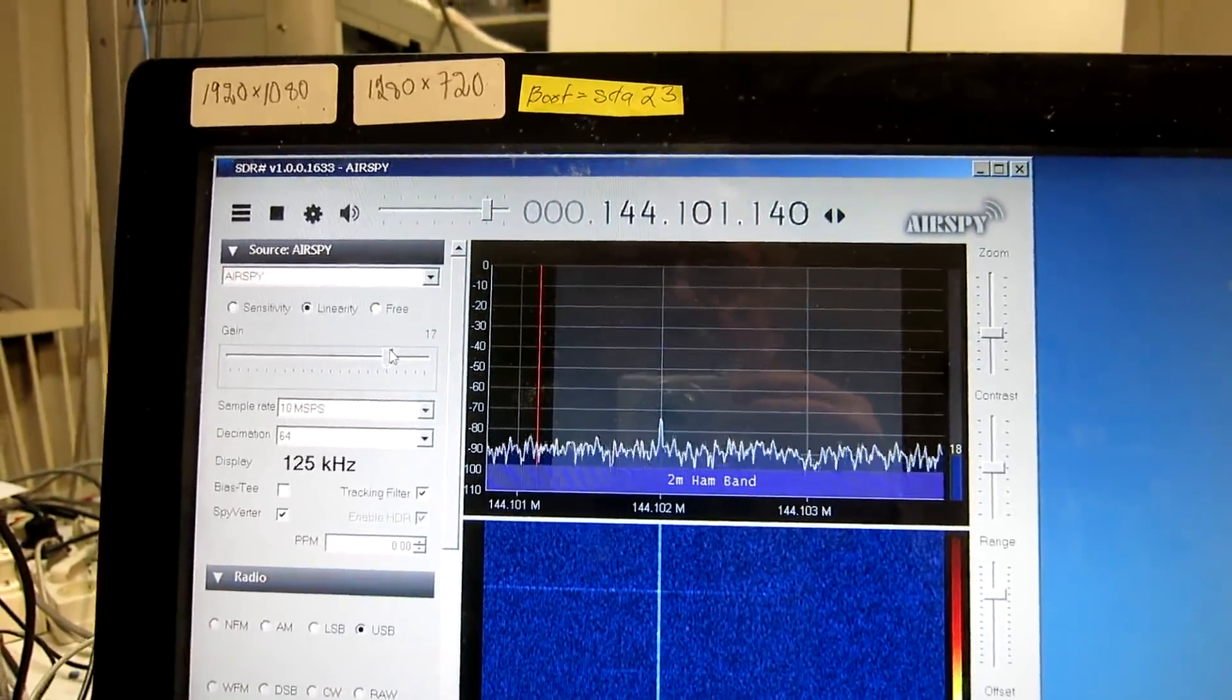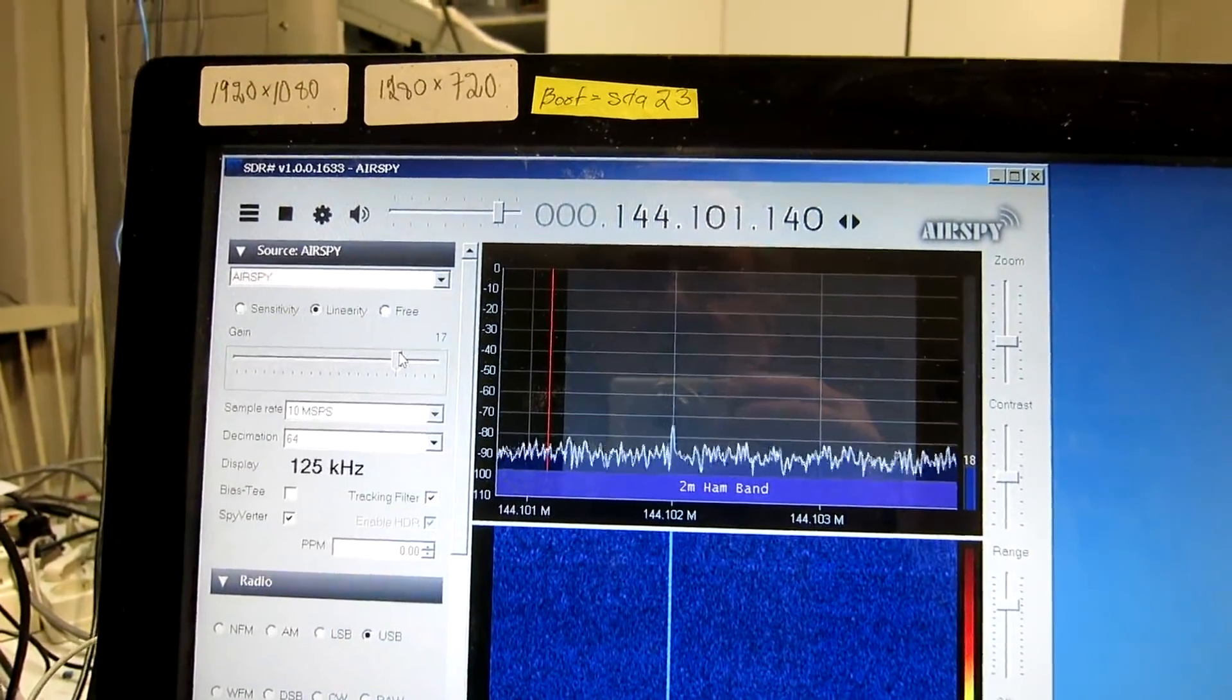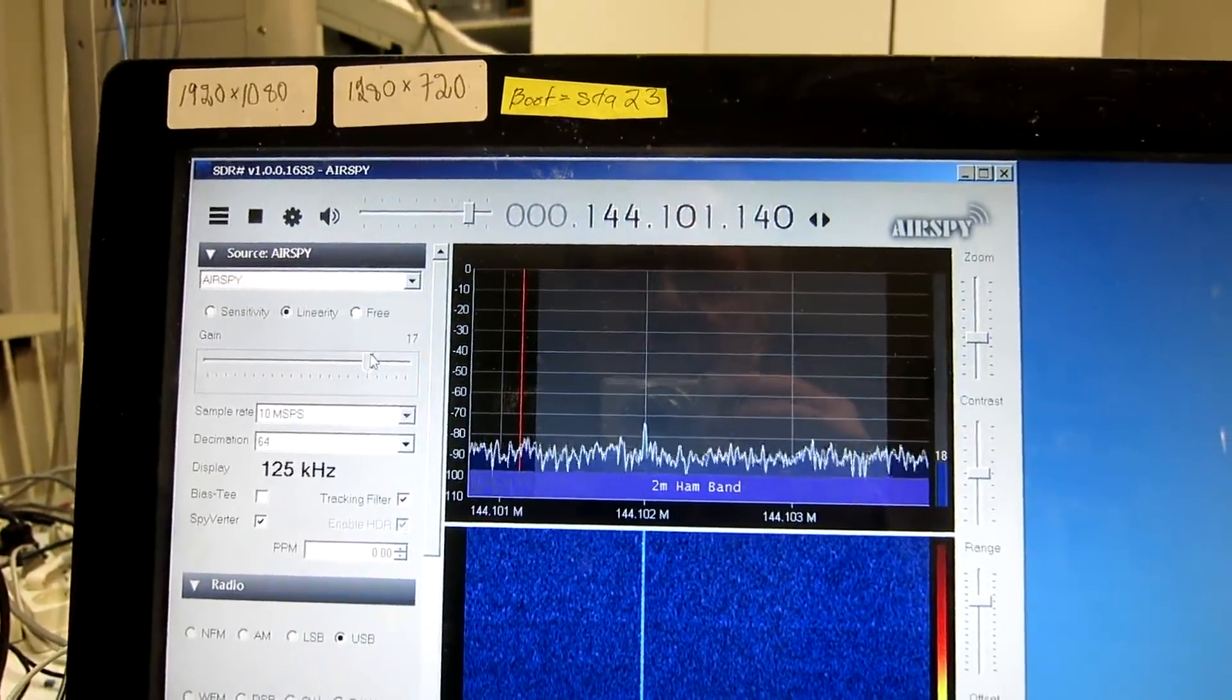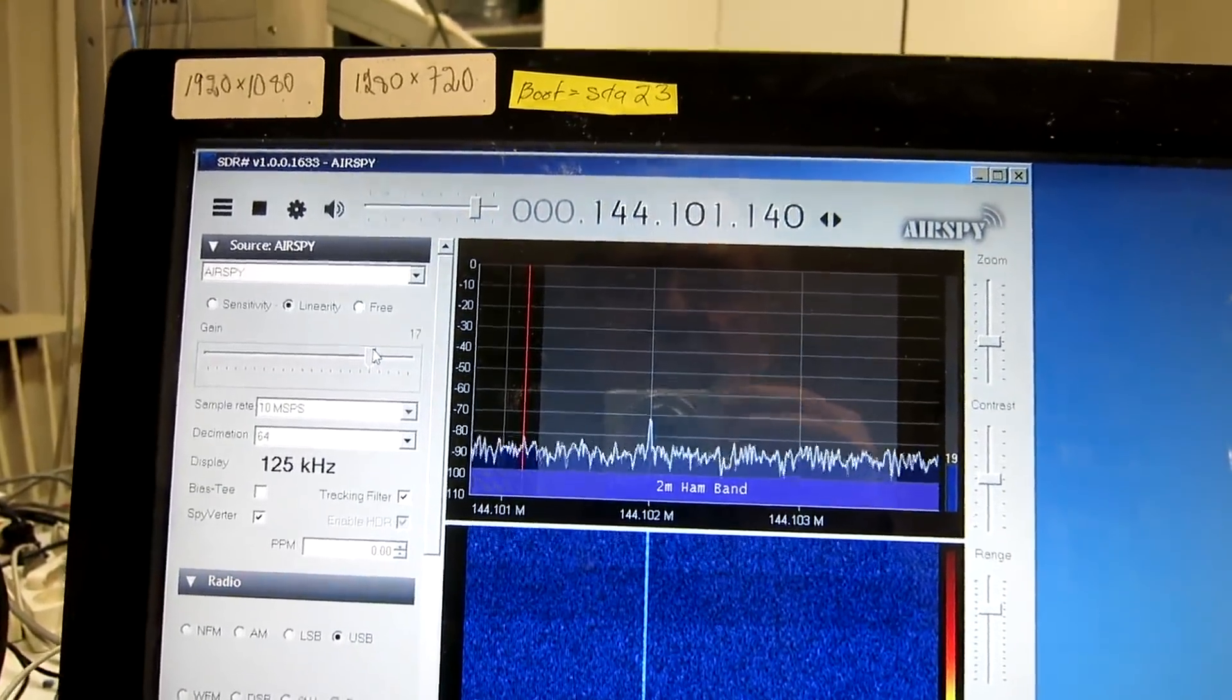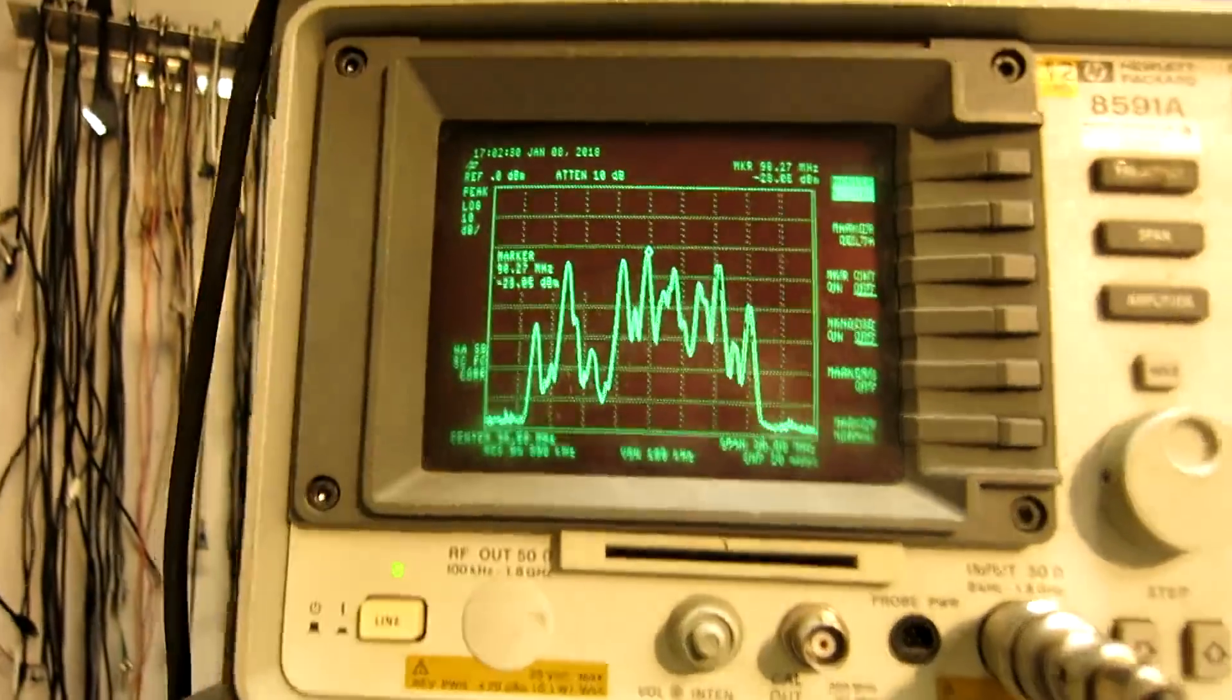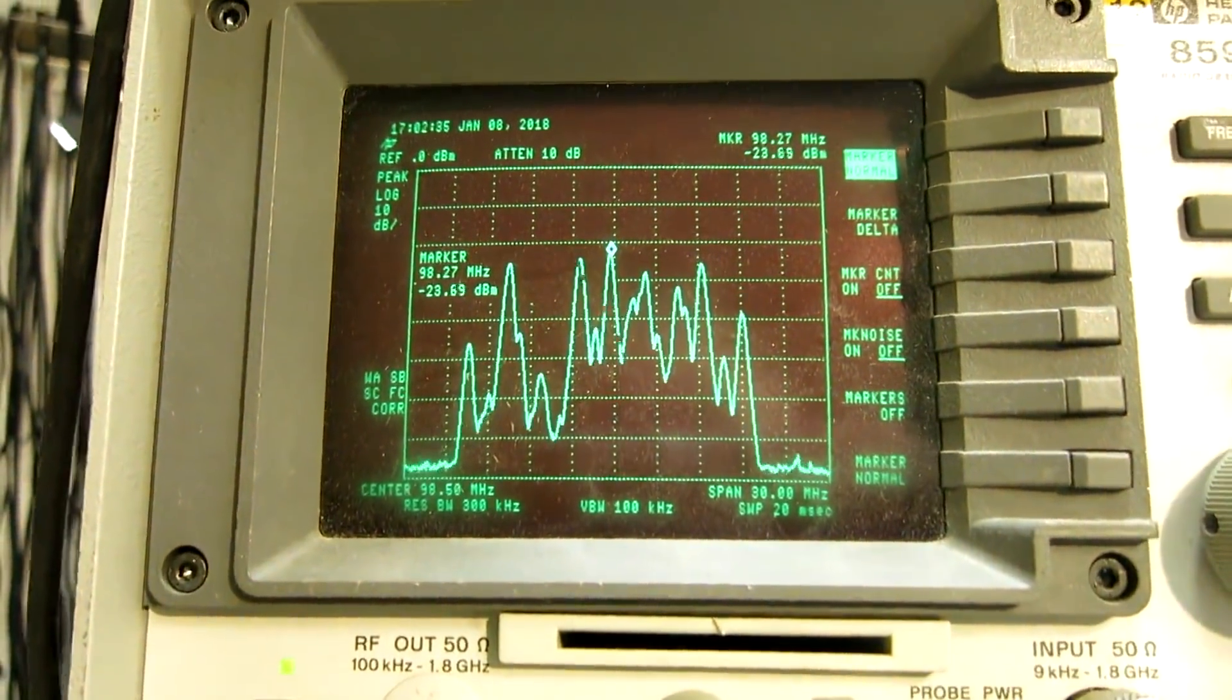I switch them off and on. Maybe this is a 5 dB loss, not quite. But the levels of the FM band now is minus 23 dB for the strongest station.